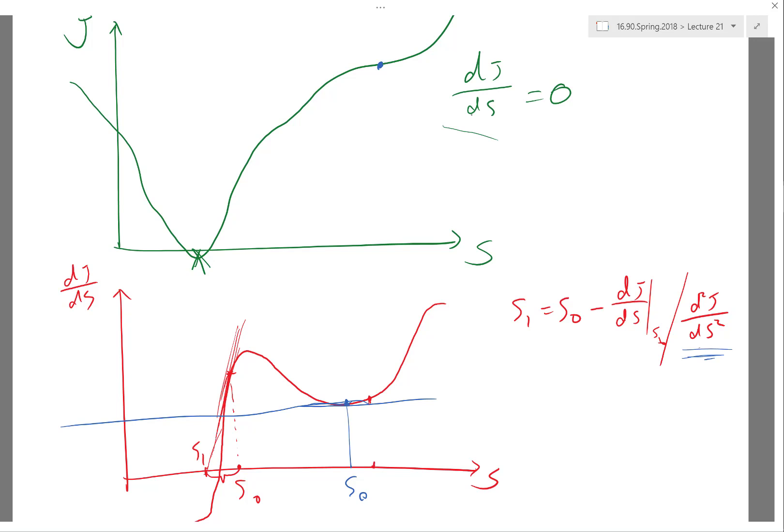That's the essence of line search. A good line search algorithm really defaults to the Newton's method when you are actually getting close to the minimum. But when you are far away from it, it still guarantees that every step, I'm improving the objective function.